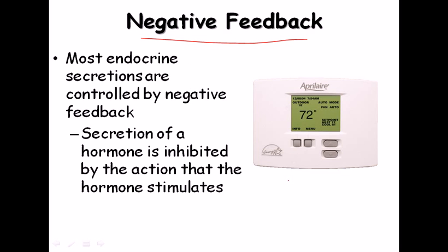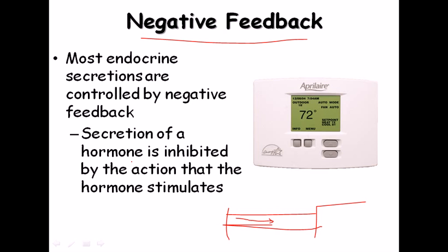The testes secrete testosterone, which controls sperm production and secondary sexual characteristics in males. The hormone system works as a negative feedback loop. As an analogy: a car moving over a shaky bridge will stop when it senses the bridge is unsafe — the movement of the car is inhibited by the very situation that its movement caused. Similarly, the secretion of a hormone is inhibited by the action that the hormone stimulates.